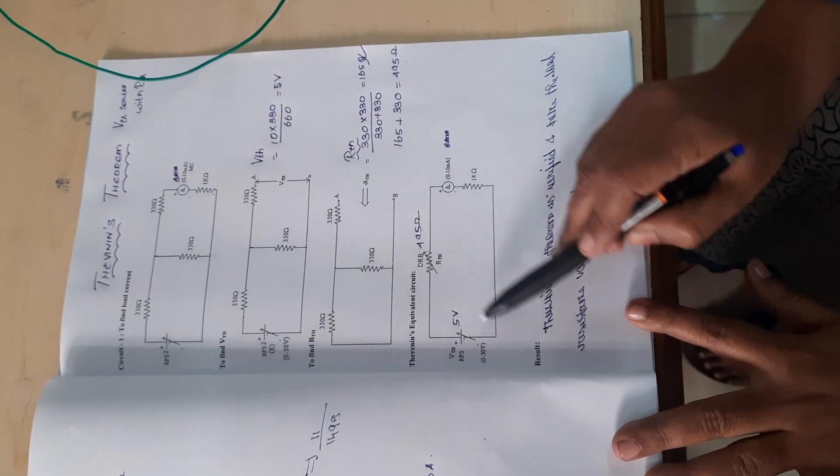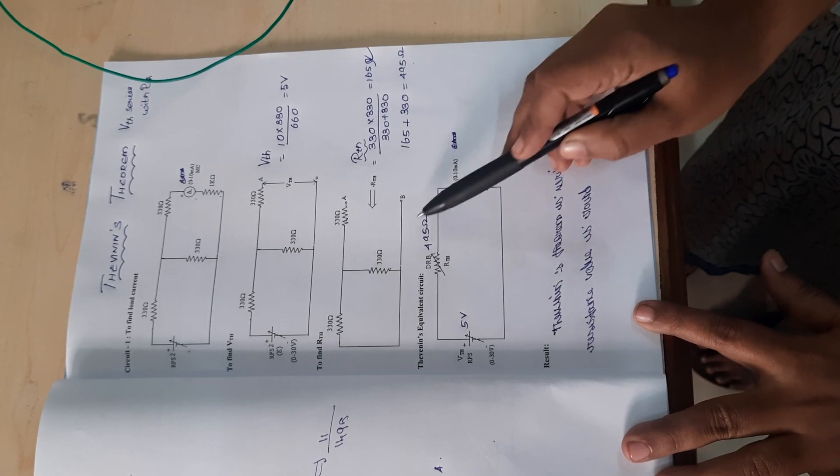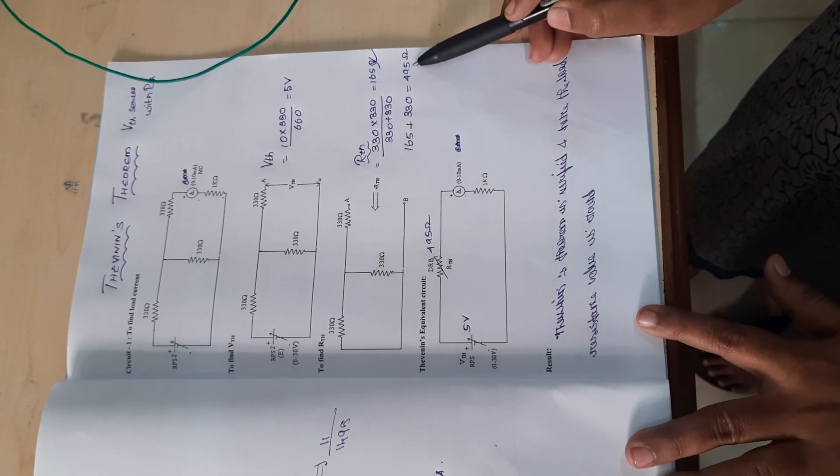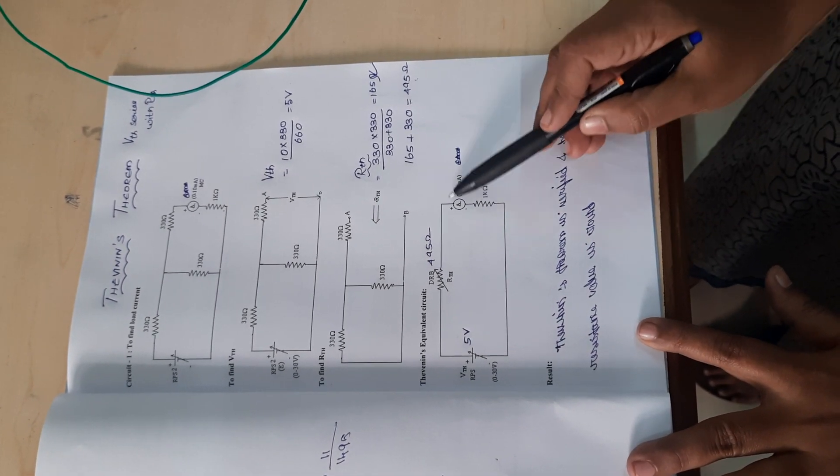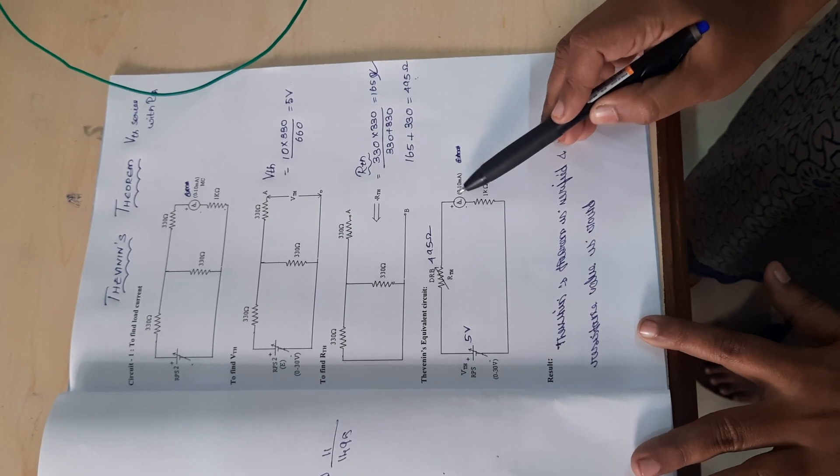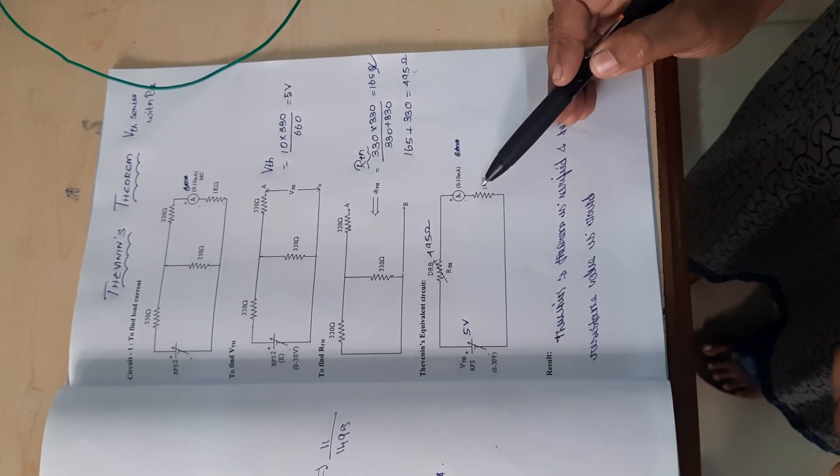Moving to Thevenin's equivalent circuit, the voltage is 5 volts and we set the decade resistance box to 495 ohms. We should get the same current value here. This can be verified in the next lecture. Thank you.